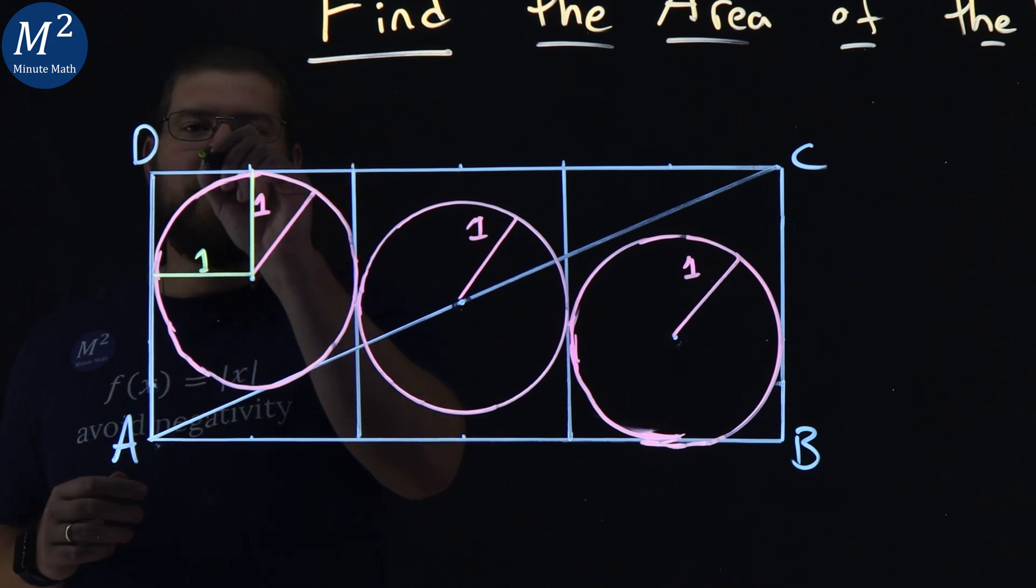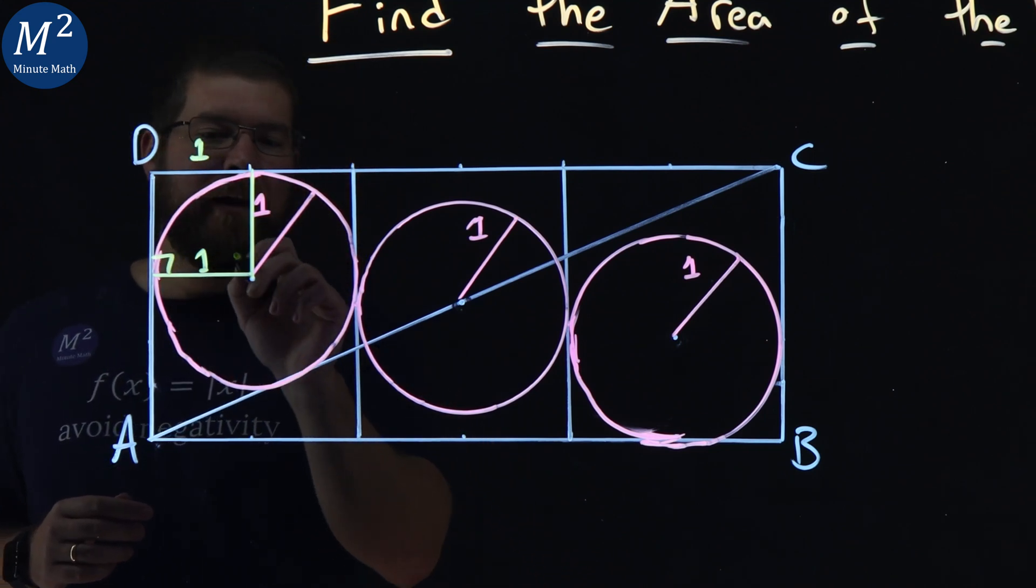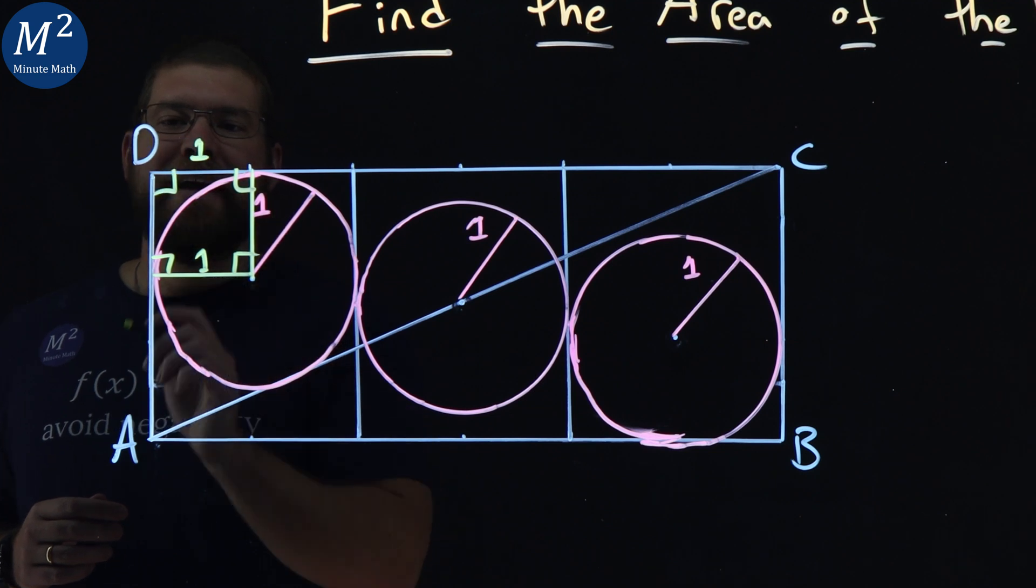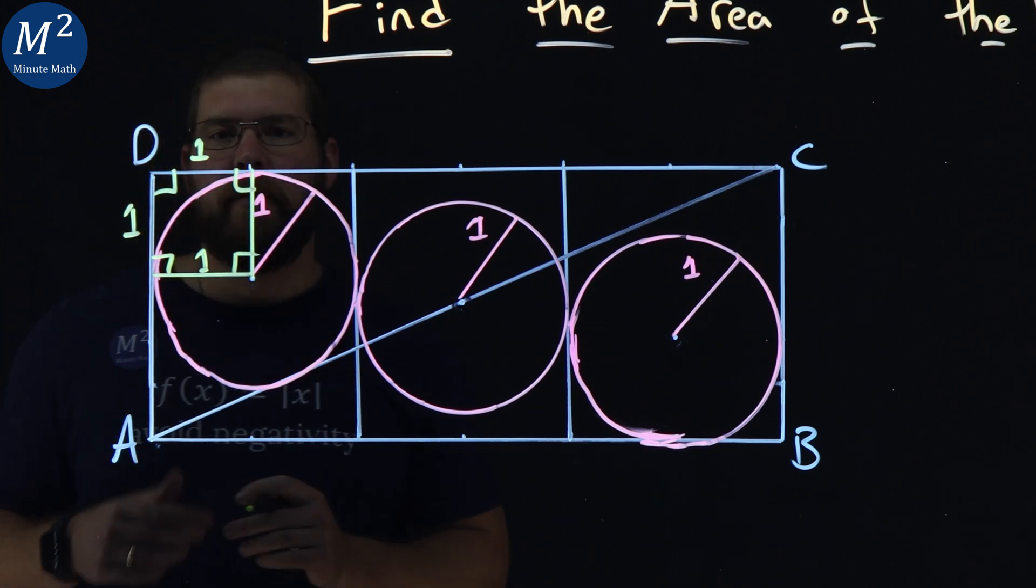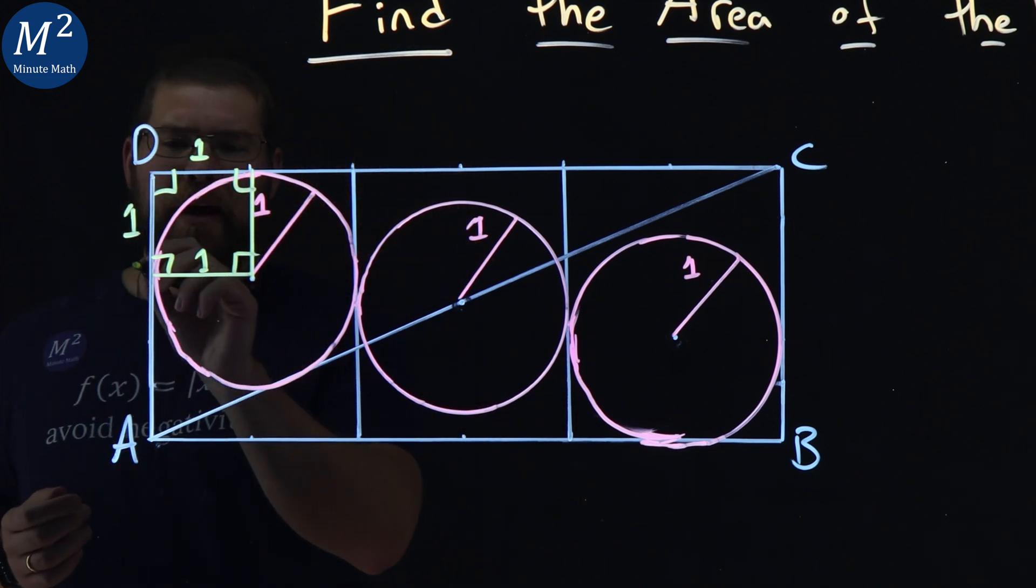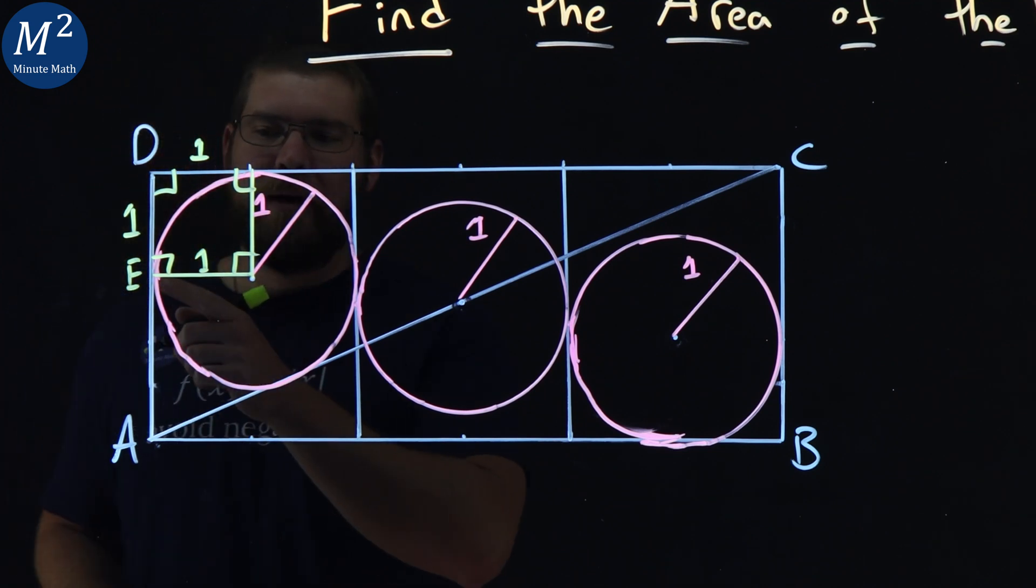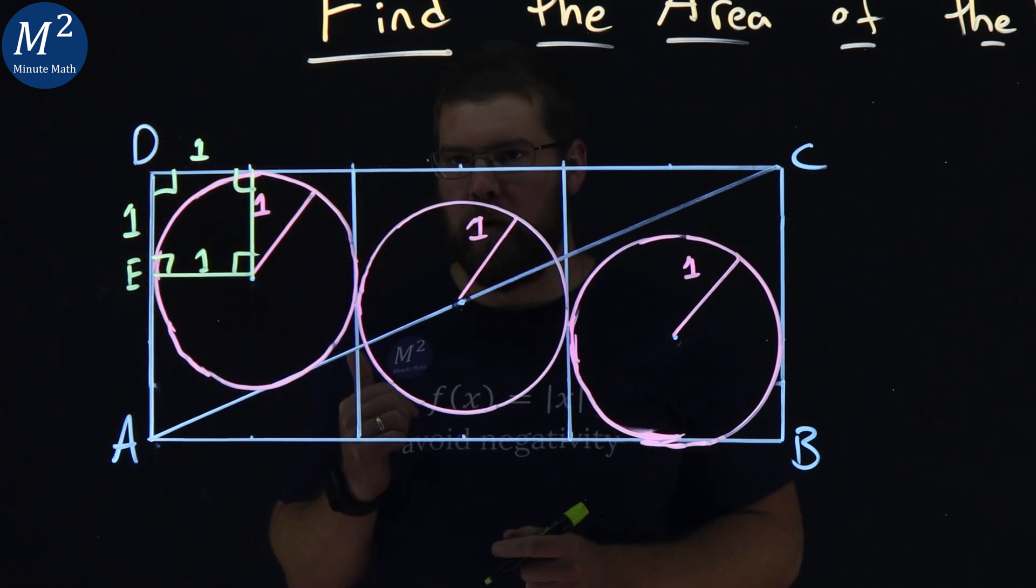We have this as a length of one right here, right angles going on, and this has a length of one. We can call this point E right there, so DE has a length of one.